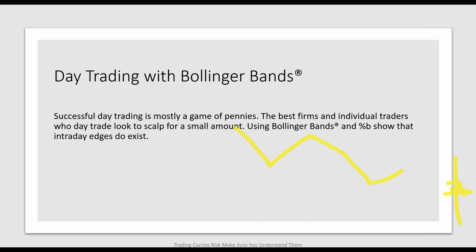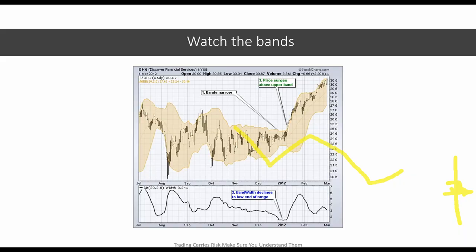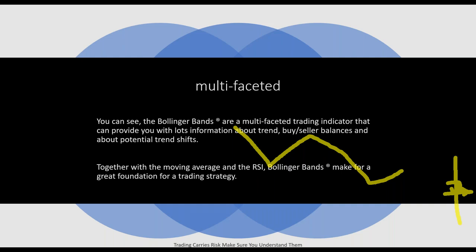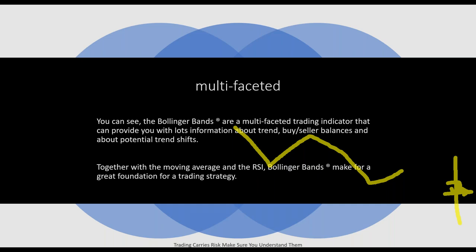Successful day trading is mostly a game of pennies. The best firms and individual traders scout for small amounts, and using Bollinger Bands shows that an intraday edge does exist — there is a preciseness here, so use it to your advantage. Bollinger Bands are a multifaceted trading indicator providing information about trends, buyer and seller balance, and potential trend shifts. Together with the moving average and RSI, Bollinger Bands make for a great foundation for any trading strategy. Thank you for joining us tonight and being part of the ETX family — see you Thursday.